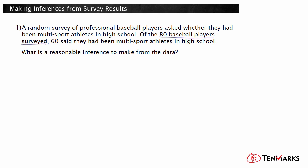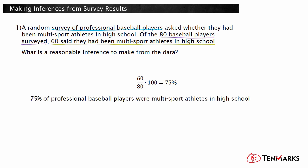The 80 people surveyed are randomly selected from the population of all professional baseball players, so you can only make inferences about this group of people. 60 of those players were multi-sport athletes in high school. Calculate the percentage that 60 is of 80. So you can infer from the survey that about 75% of professional baseball players were multi-sport athletes in high school.